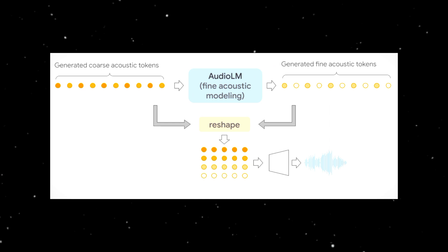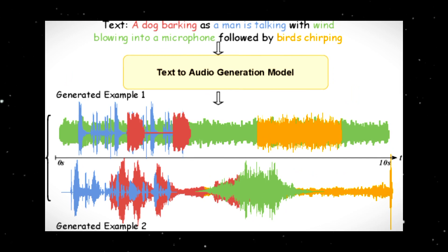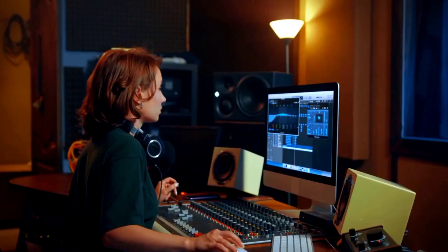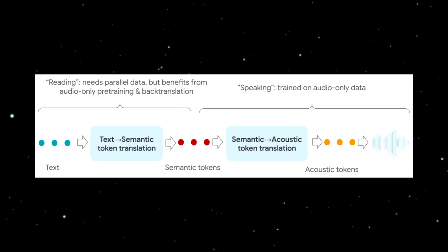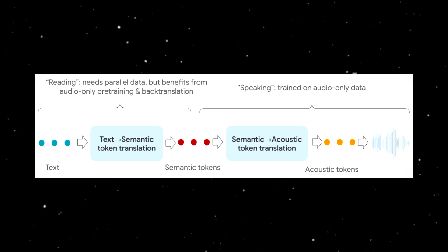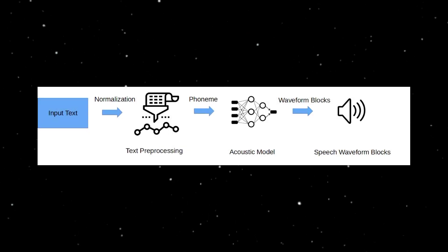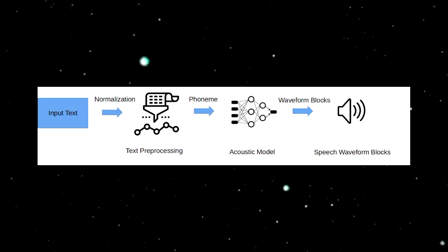One of Soundstorm's most impressive capabilities lies in its ability to synthesize natural dialogues by leveraging the text-to-semantic modeling stage of Spear TTS. Users can now control the spoken content and the voices of the speakers by providing transcripts with speaker turns and short voice prompts. Remarkably, Soundstorm can synthesize 30-second dialogue segments in a mere two seconds on a single TPUv4. Comparing the audio generated by Soundstorm to standard baselines reveals equivalent quality to Audio-LM, with superior consistency and acoustic integrity, excelling at preserving the speaker's voice with astonishing accuracy.